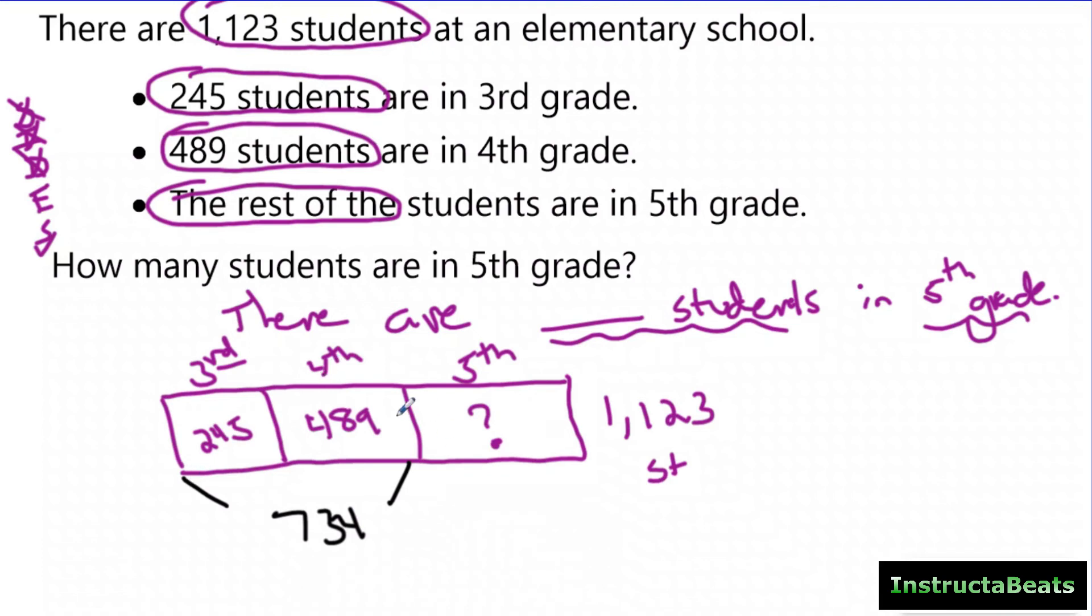So so far they know 734 students, and they're looking for the rest of them. Well again, you want to get rid of the pieces that you already know if you're trying to find that missing third piece.